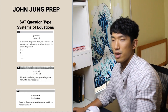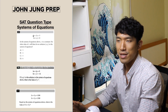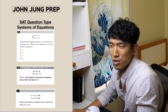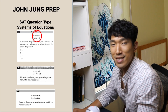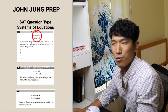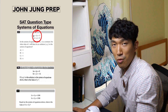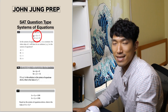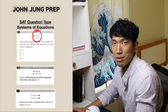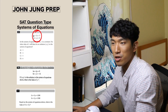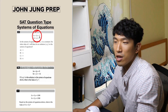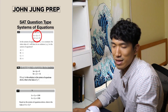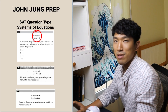First of all, how do we know whether the SAT is testing us on systems of equations? Whenever you see a question with two equations, it's a systems of equations question. One equation is just an equation, but once there's more than one — two or three — that becomes a system. So whenever you see two equations like that, you know it's a systems of equations question.